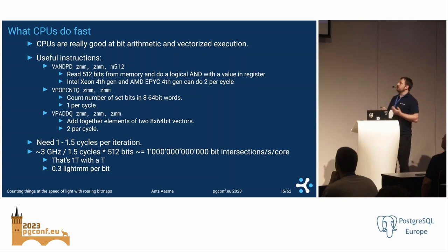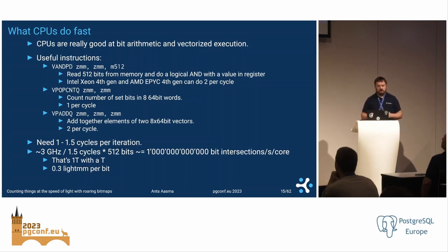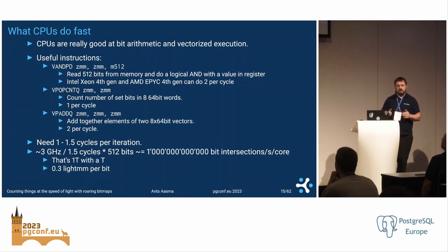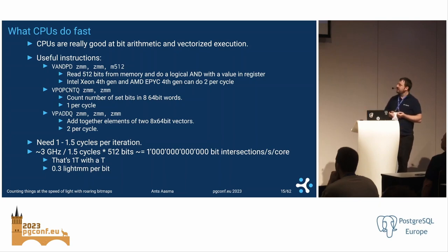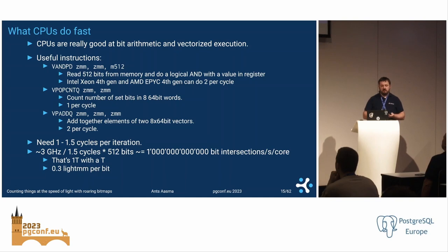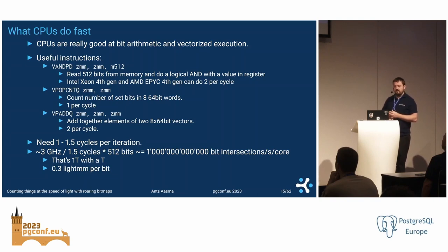Just to see some numbers: if we pipeline all of this, the CPU will be able to execute them so that every one to one-and-a-half cycles we get a result back. In effect, we will be able to run at something like 1 trillion bits per second per core. Going back to our speed-of-light metaphor, that's 0.3 millimeters per bit. If you imagine we had to go 30 meters versus 0.3 millimeters, that's quite a difference — so we can do quite a lot of work when we are doing it so much faster.